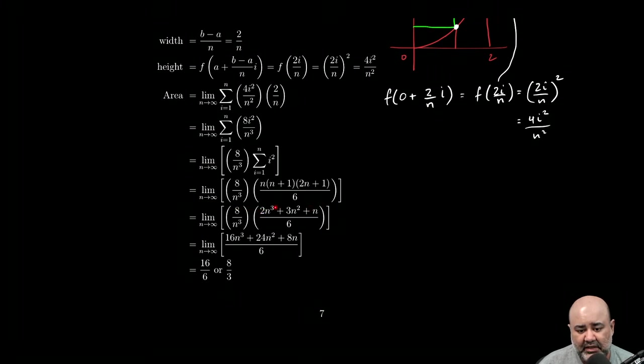Now, we can multiply the 8 by the numerator, multiply the 6 by the denominator. And then you get—something very bad happened here. This should have an N cubed. My mistake. Please make sure you fill that in. So if I multiply 8 by 2N cubed plus 3N squared plus N, we get 16N cubed plus 24N squared plus 8N. And if I multiply 6 by N cubed, I get 6N cubed.